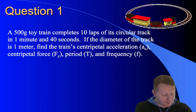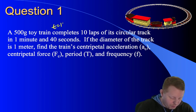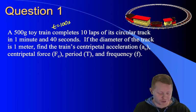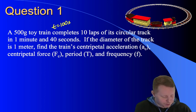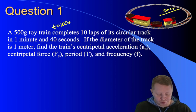A 500 gram toy train completes 10 laps of its circular track in one minute and 40 seconds. Right away, I know my time is going to be 100 seconds. If the diameter of the track is one meter, that means its radius is 0.5 meters. Find the train's centripetal acceleration, centripetal force, period, and frequency.